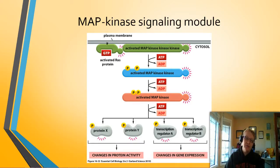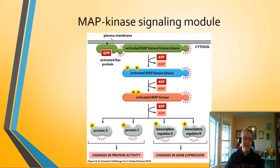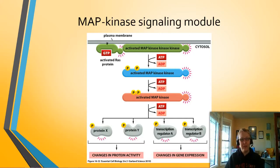RAS activates the MAP kinase kinase kinase, which activates the MAP kinase kinase, which in turn activates the MAP kinase. It's a funny series of names, but the kinase kinase kinase activates the kinase kinase, which activates the kinase, which then activates a whole bunch of different pathways depending on the purpose of the signal. This is the MAP kinase pathway.